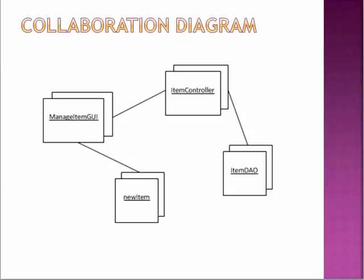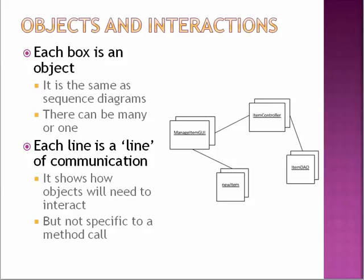It doesn't necessarily mean that an object isn't passed as a parameter. So it is possible in both of these that I could take like new item and pass it into item controller, which passes into item DAO as a parameter. This is just showing direct method calls that are happening. When you would write the code, you would say manage item GUI would be calling the code new item dot set value or item controller dot add. Item controller is called item DAO dot add. So that's the implication. It's a direct call dependency.